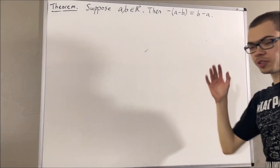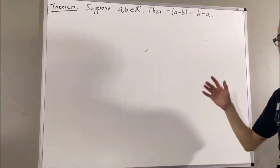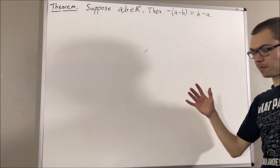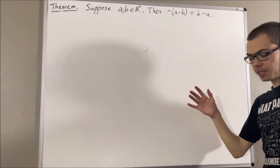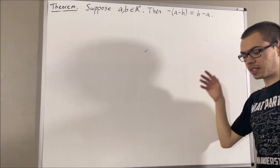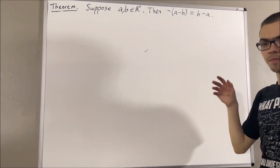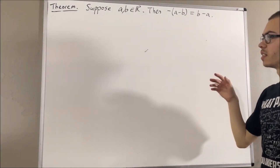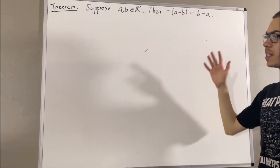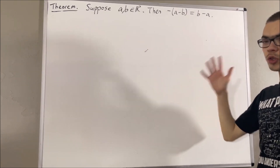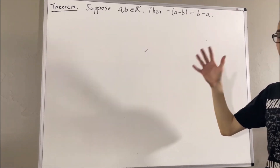Now in this series, we are using a list of 10 axioms for the real number system. I'll leave that list of axioms in the description below. In this video, we are going to be using the following axioms.